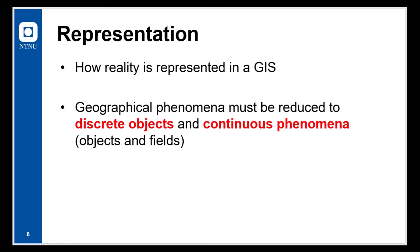Now representation, therefore, is how reality is represented in a GIS. Reality is complex and no representation can represent reality entirely. To be able to represent something from the real in a GIS, it needs to be reduced to either discrete objects or continuous phenomena, two strategies known as the object and field view.